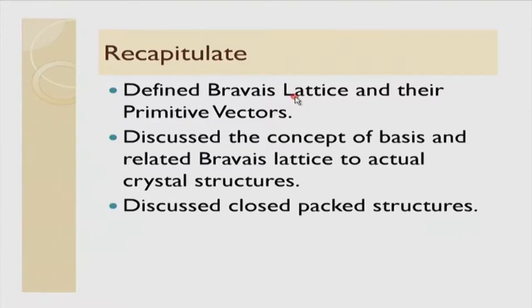Now let us come to the normal lecture. Let me start by recapitulating what we did last time. We defined the Bravais lattice and its primitive vectors. Then we discussed the concept of basis and related the Bravais lattice to actual crystal structures — how we generate ideal crystal structures starting from a Bravais lattice and putting a basis identically on each lattice point. Finally, in our last lecture, we discussed close-packed structures — specifically hexagonal close-packed and cubic close-packed — and insisted that cubic close-packed is nothing but a face-centered cubic structure, where the (1,1,1) plane is the close-packed plane.